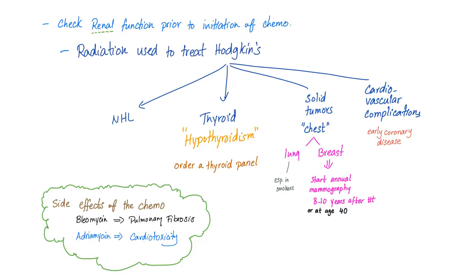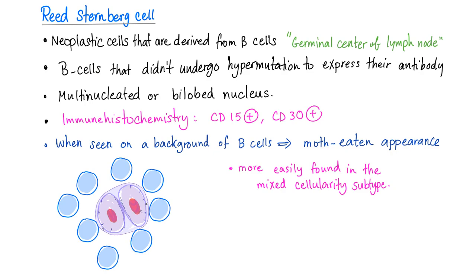Check renal function before giving chemo. Radiation used to treat Hodgkin's has many side effects, including non-Hodgkin's lymphoma and hypothyroidism — so order a thyroid panel. Solid tumors such as lung cancer in smokers and breast cancer in females may develop; start annual mammography eight to ten years after treatment or at age 40, whichever is earlier. Cardiovascular complications include coronary disease and cardiomyopathy. Chemotherapy side effects: bleomycin can cause pulmonary fibrosis; Adriamycin can cause cardiotoxicity, specifically cardiomyopathy. The Reed-Sternberg cell is derived from B-cells that did not undergo hypermutation; immunohistochemistry shows CD15-positive and CD30-positive with the classic owl-eye appearance.